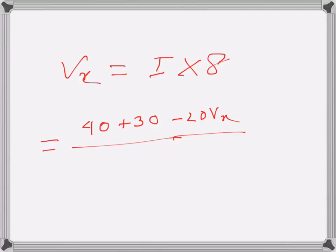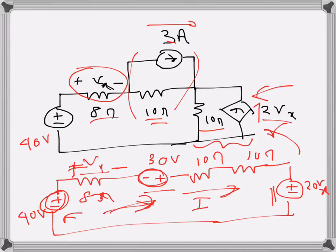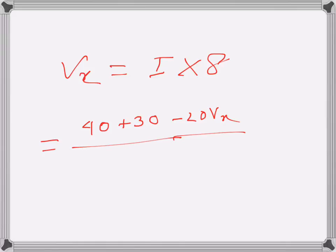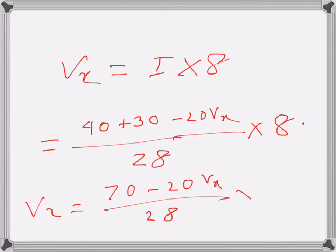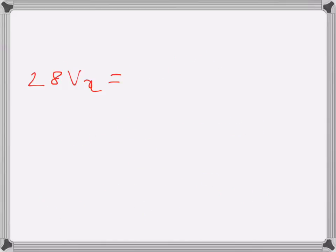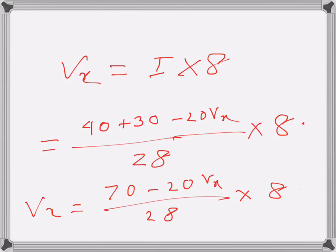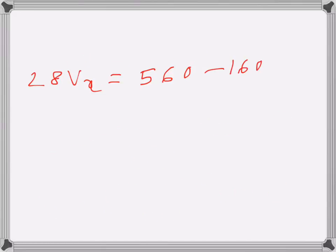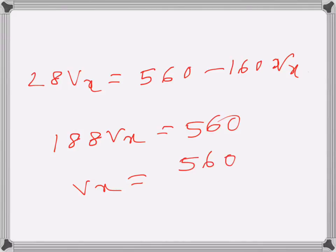The sum of resistances will be 8 plus 10 plus 10, which equals 28 ohms. So Vx equals 28 times I times 8, giving 28Vx equals 8 times 70, which is 560, minus 8 times 20Vx, which is 160Vx. This becomes 188Vx equals 560, so Vx equals 560 over 188, which is approximately 2.98 volts. That is the value of Vx.